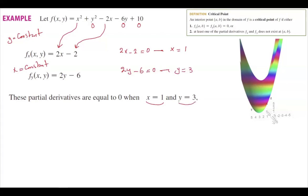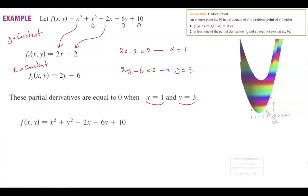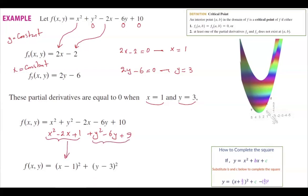To find the z value, plug the critical point into the function, or complete the square. Completing the square: group (x² − 2x + 1) and (y² − 6y + 9), which give (x − 1)² and (y − 3)². Plugging in x = 1 and y = 3 makes both terms zero, revealing the minimum value of the function.